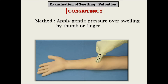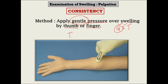The process of assessing consistency is quite easy — apply gentle pressure over the swelling using your thumb or finger. I emphasize that you should be quite gentle. Remember the GST rule from the beginning of the palpation series: gentle, sequential, and time. When assessing consistency, press very gently and be very careful handling a tender swelling. That is why tenderness should be assessed quite early in the examination.